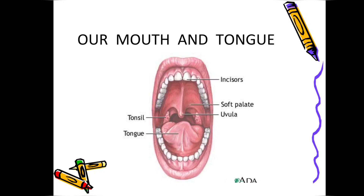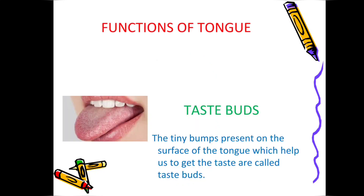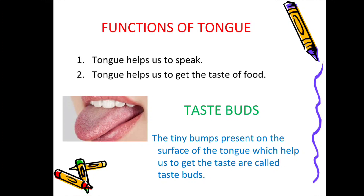Next is the tongue, which is a vital part of our mouth. The functions of the tongue are: it helps us to speak and it helps us to get the taste of food. The tiny bumps present on the surface of the tongue which help us to get the taste are called taste buds.